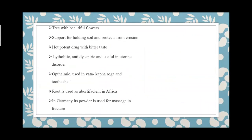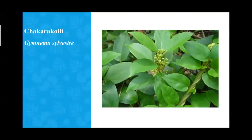This tree has hot potency and bitter taste. It is litholytic — it can destroy stones — and is an anti-dysenteric drug controlling diarrhea or dysentery. It is considered ophthalmic and useful in Vata-Kapha rogas and toothache. In Africa, the root decoction is considered a pot emetic, and in Germany, root powder is used for massaging over fractures.